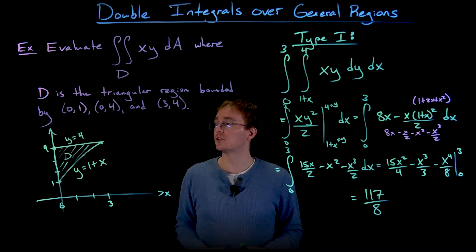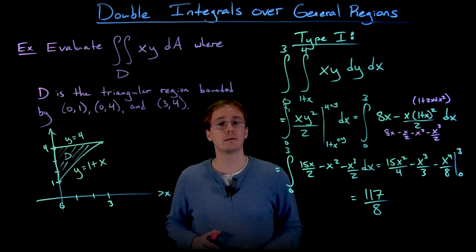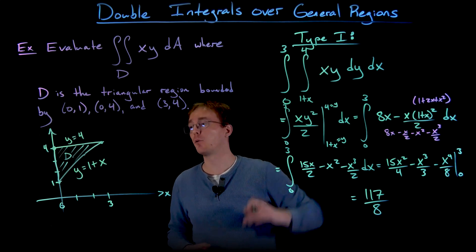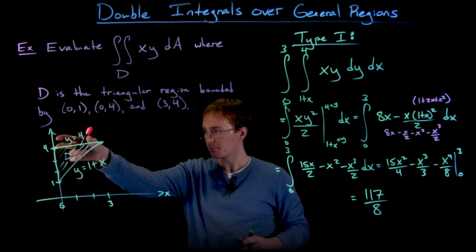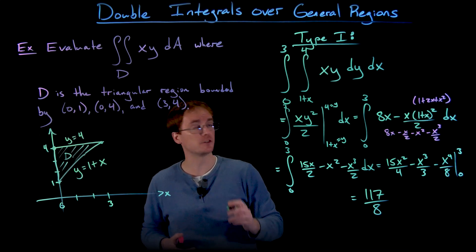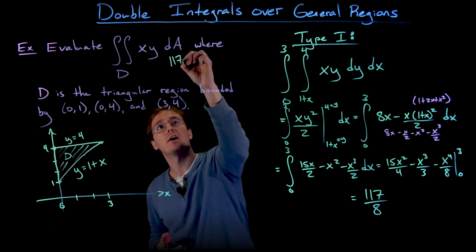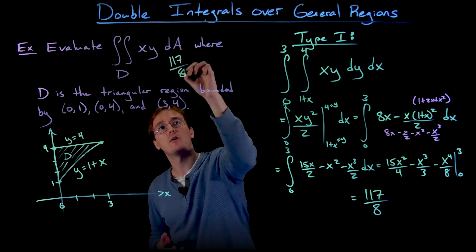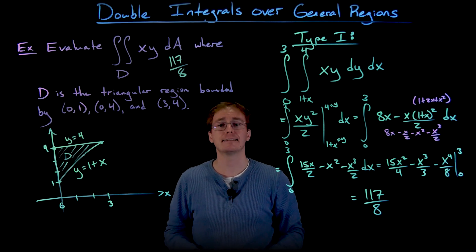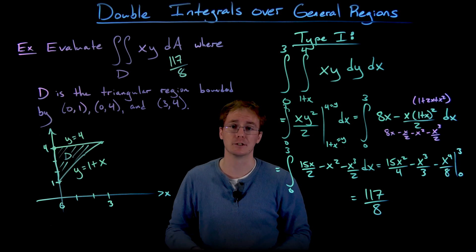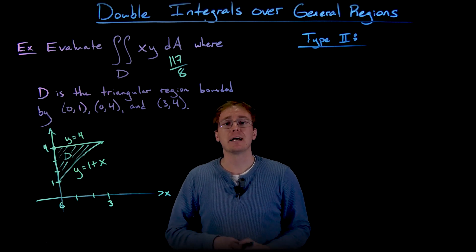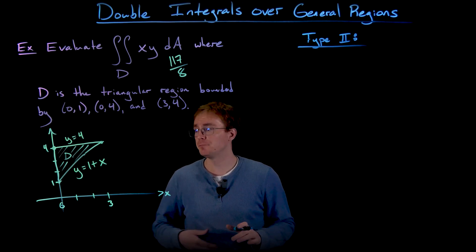So treating our region D as a type 1 region — bounded above and below by functions of x — the double integral evaluates to 117 over 8. Now let's run through this example again, but treating it as a type 2 region, and we'll evaluate the same double integral a second time.